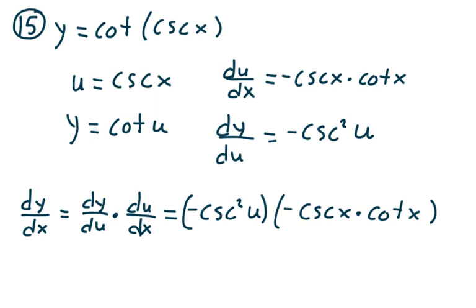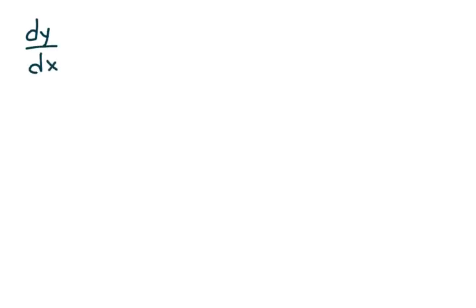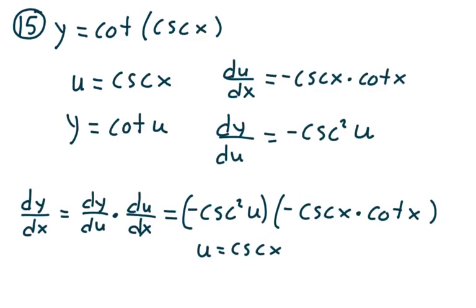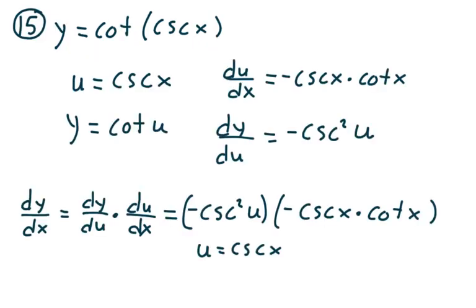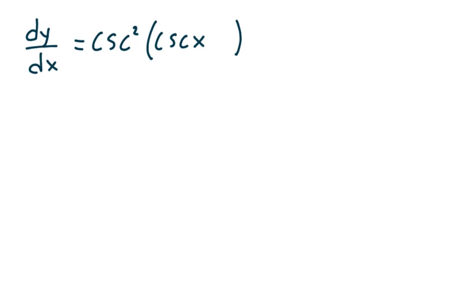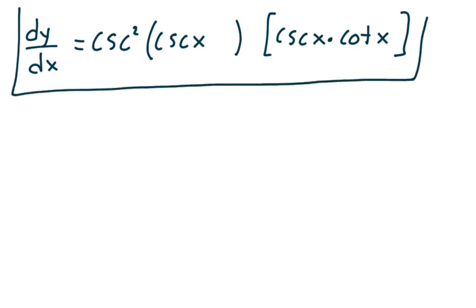Now we put it together. dy/dx is dy/du times du/dx. dy/du is negative cosecant squared u, and du/dx is negative cosecant x times cotangent x. A negative times a negative is positive, and substituting u equals cosecant x, dy/dx equals cosecant squared of cosecant x times cosecant x cotangent x. And that's how we do problem 15.